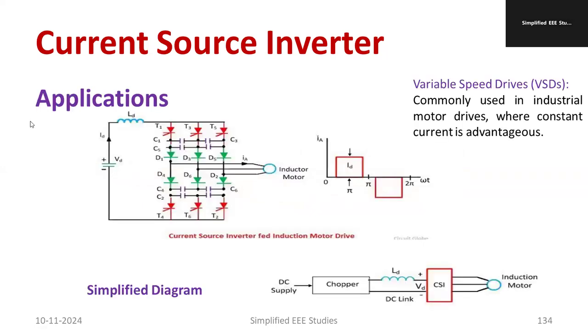The applications are VFD, variable speed drive. It is mainly used for industrial motor drives. Constant current is the advantage of this particular system. The simplified diagram is given here. We have voltage plus this inductor. This becomes a current source.